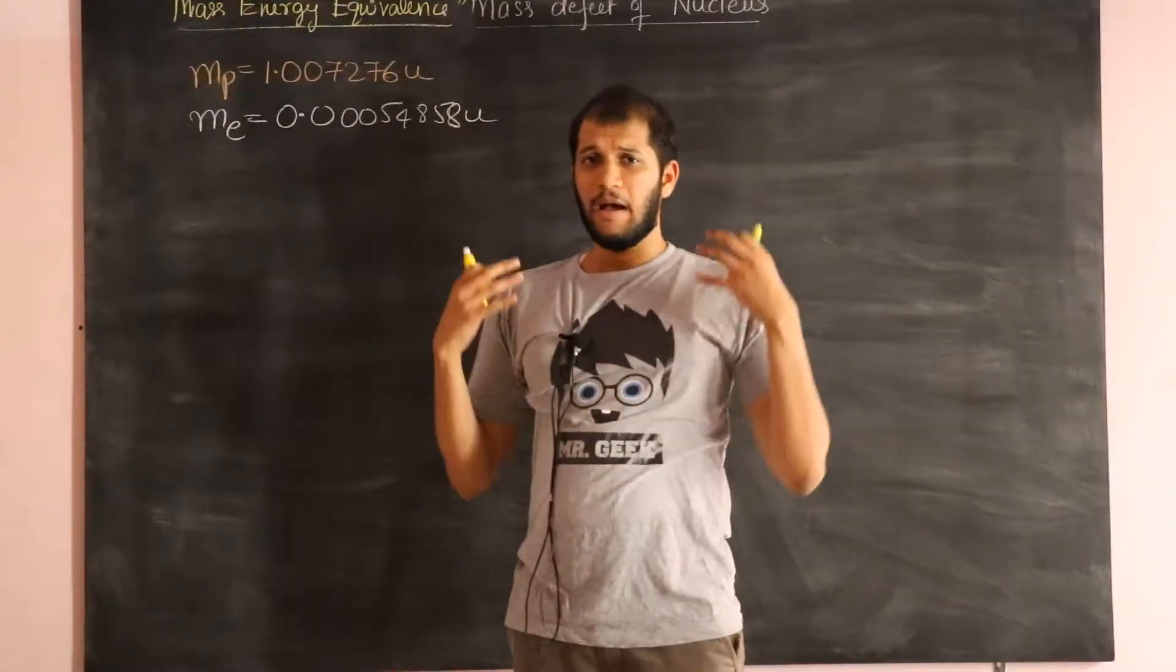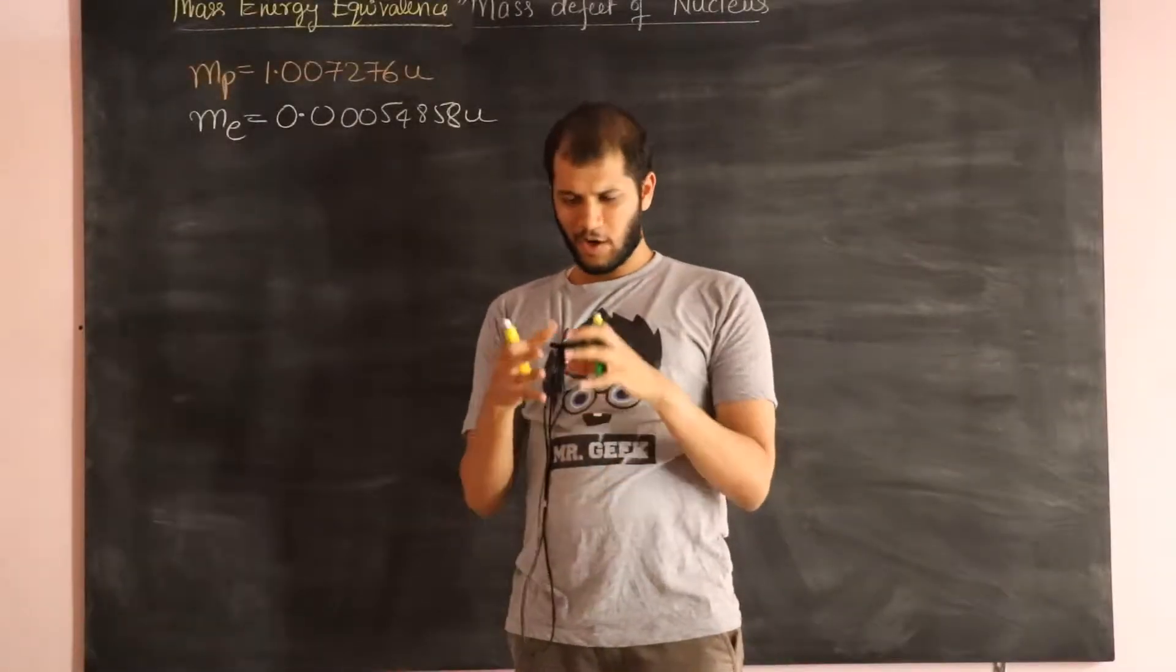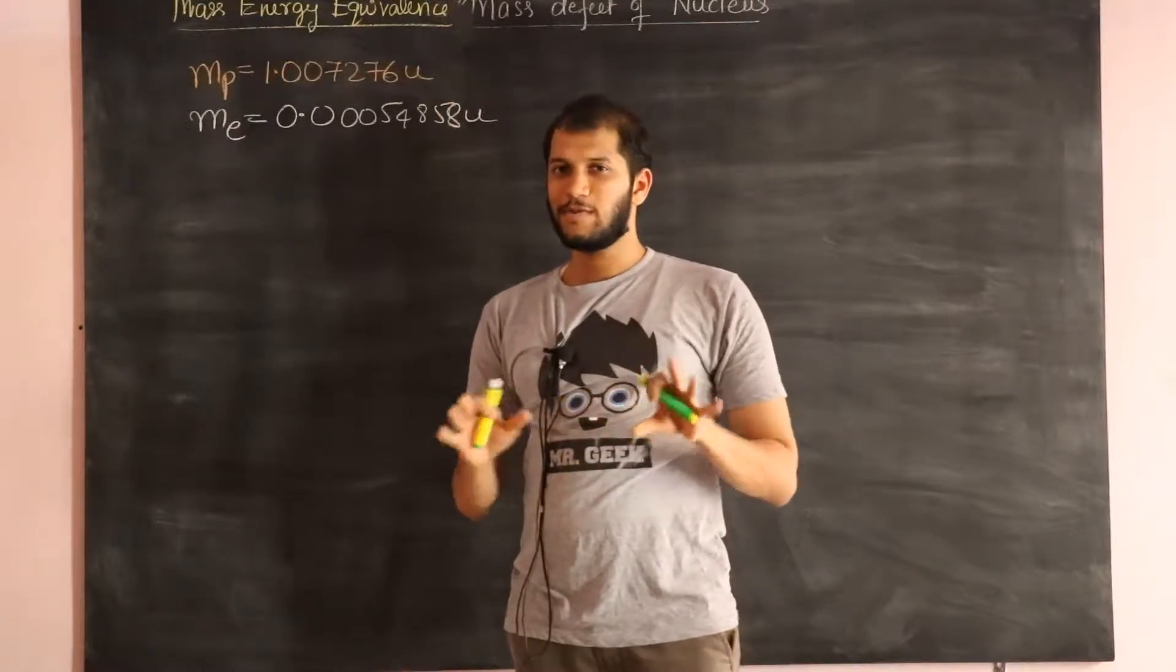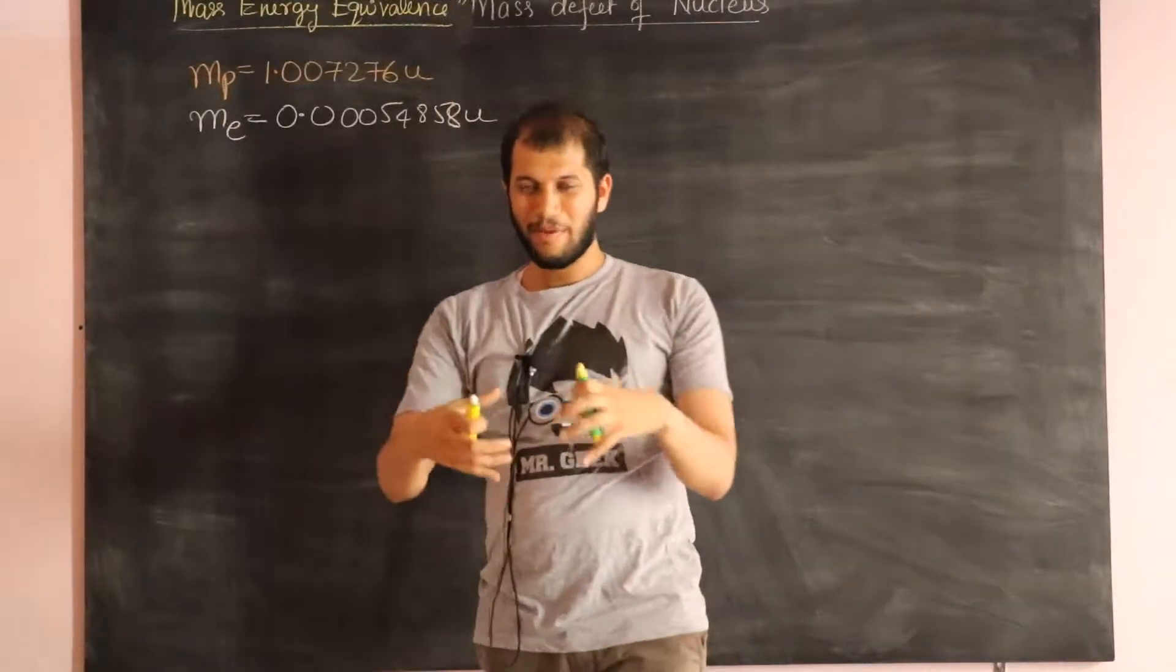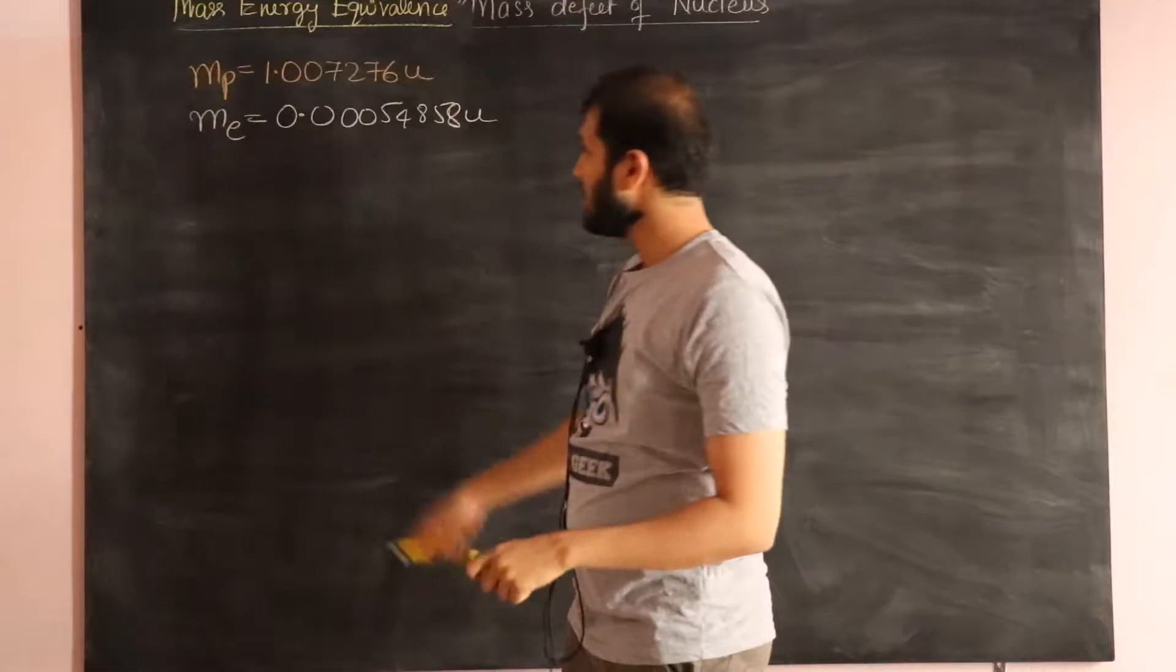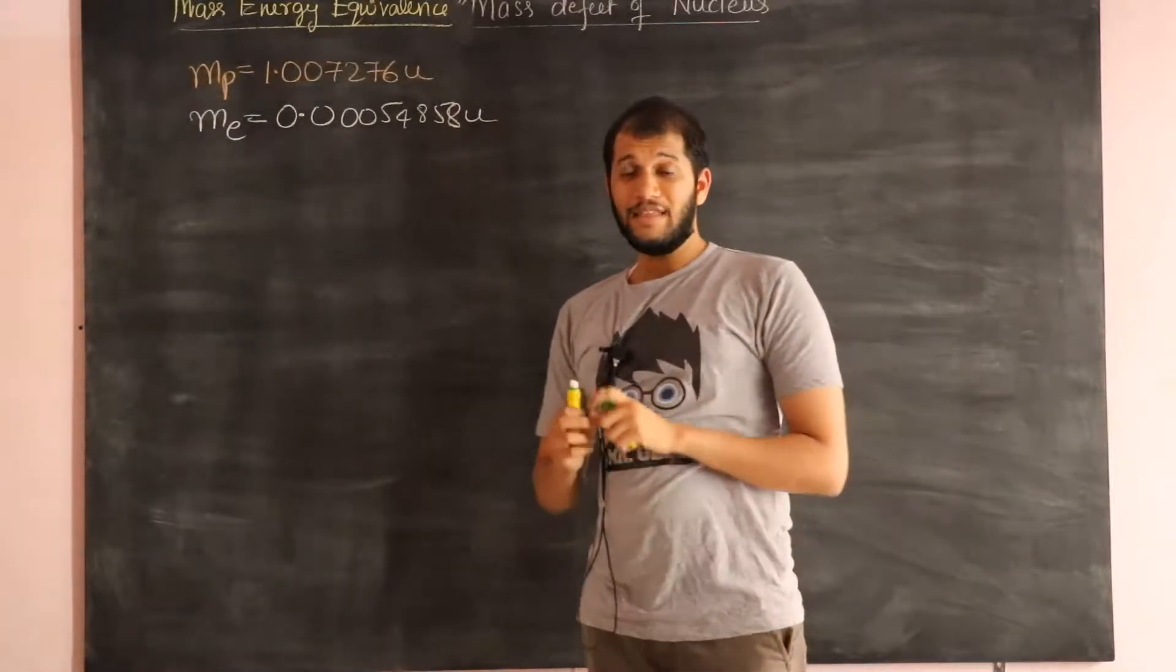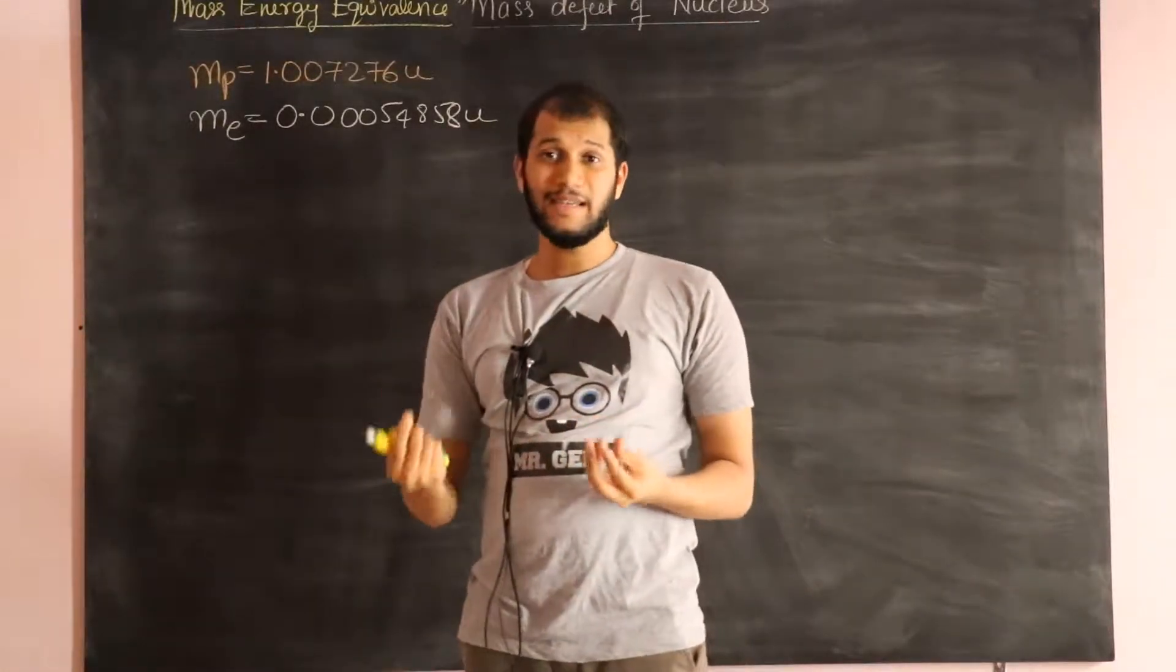Let's take an example to understand Einstein's mass-energy equivalence, a concrete example so that you will understand why the mass changes when particles come close to each other. Let's take an example of a hydrogen atom. The hydrogen atom has a proton and it has an electron inside it.